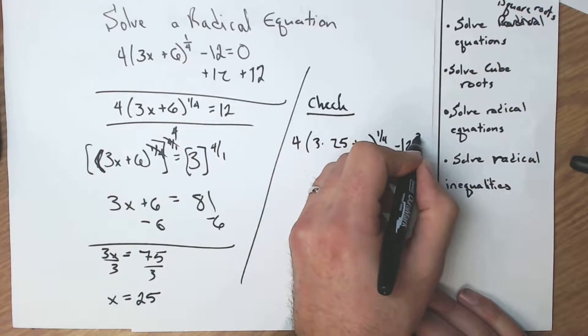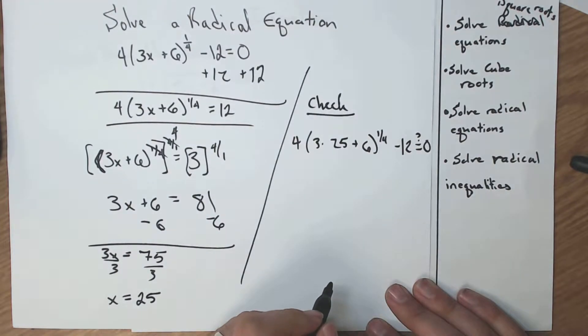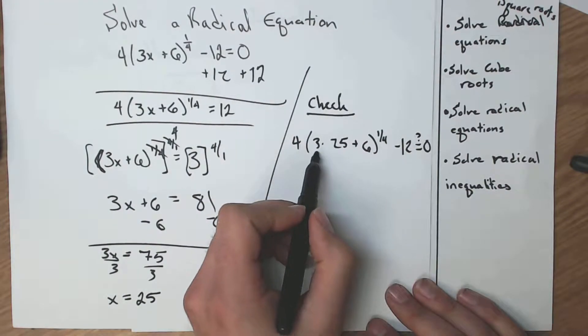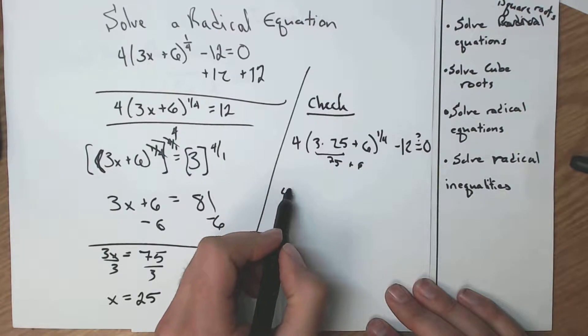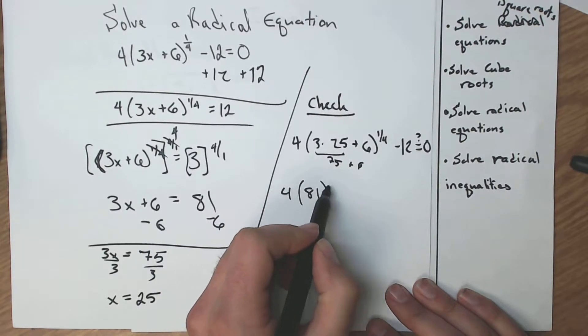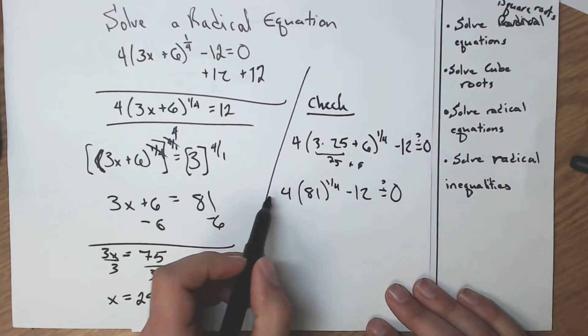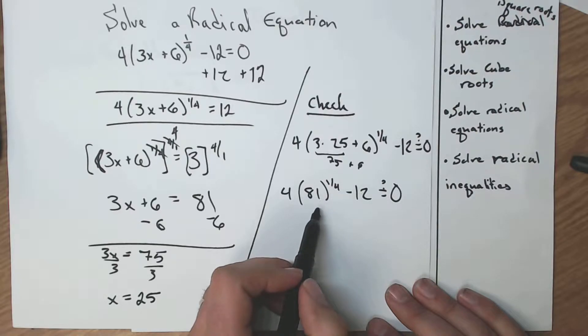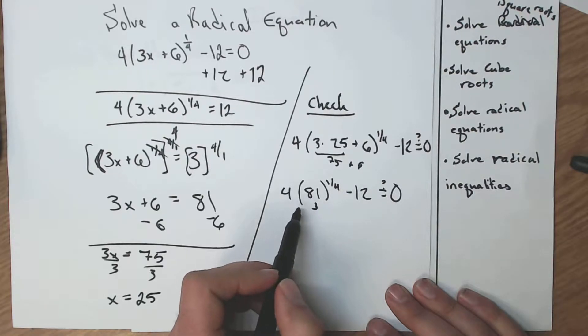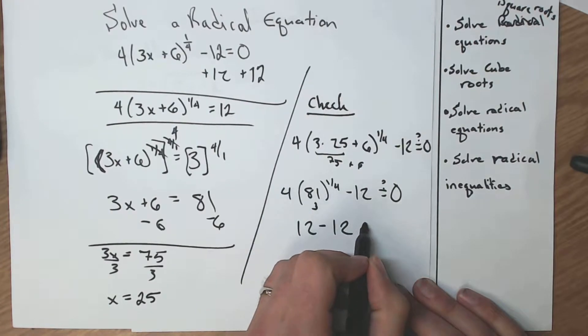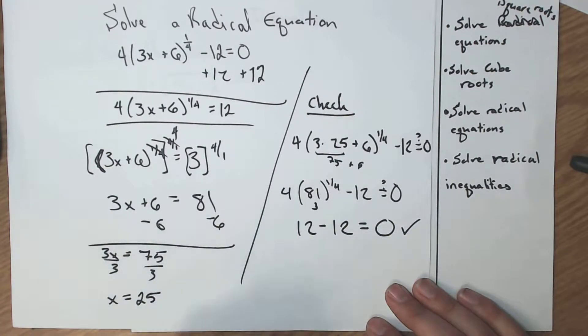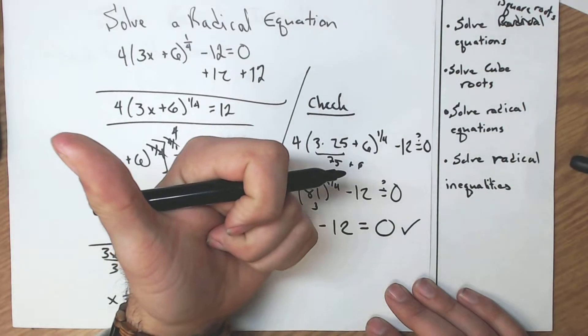Well, let's simplify the inside. 3 times 25 is 75 plus 6. Well, that's 81 to the 1 fourth, minus 12. Does that equal 0? The fourth root of 81, well, that's 3. 4 times 3, that's 12, minus 12. Yes, that does in fact equal 0. Awesome. We are good to go to the next one.